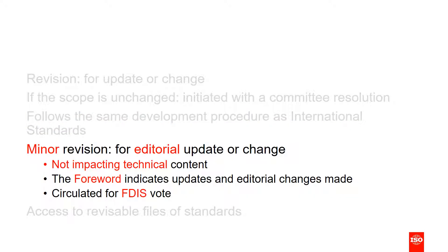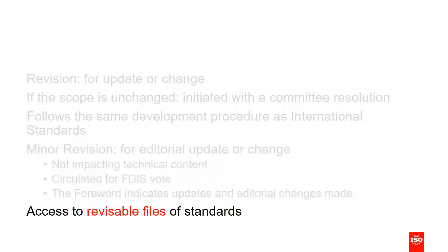A minor revision is only for editorial changes, which must be briefly described in the foreword. It cannot impact the technical content. The procedure is greatly simplified — it goes straight to the approval stage. The secretary of the committee can access the revisable files of the existing standards, so that they can update the draft and submit it to ISO Central Secretariat.